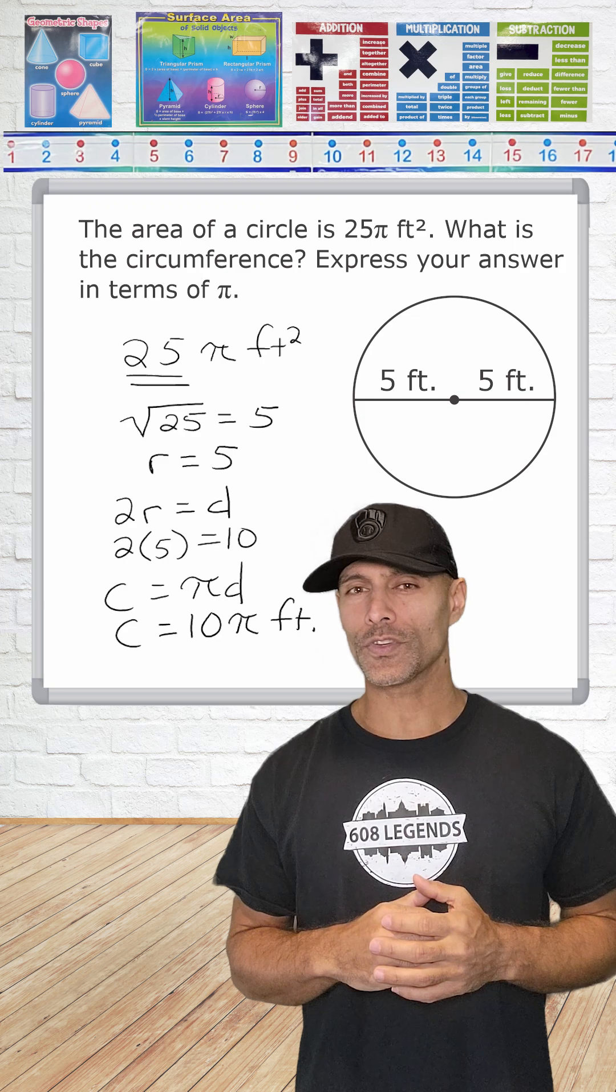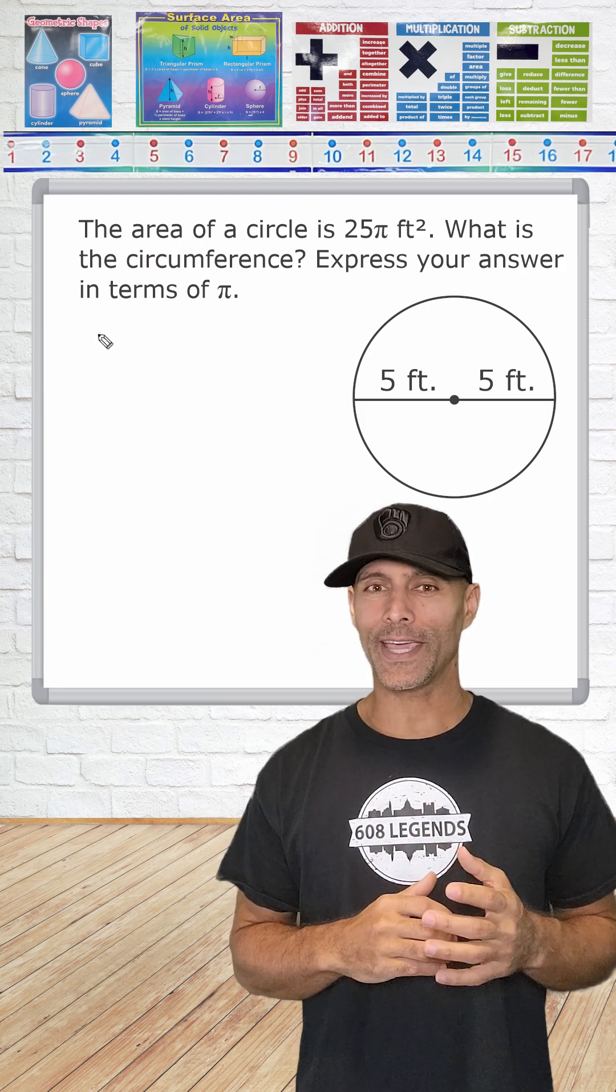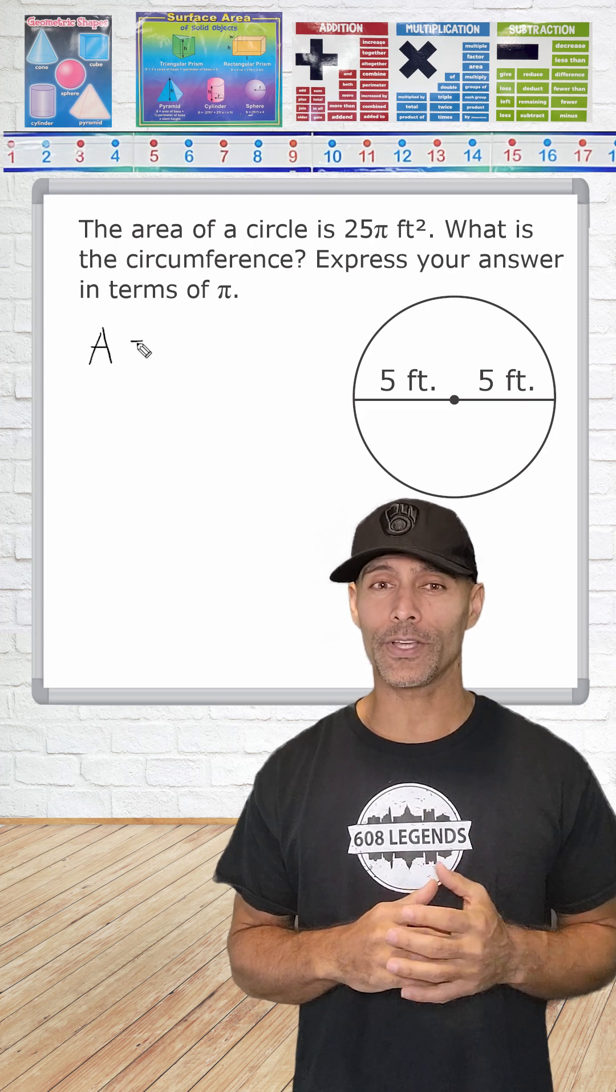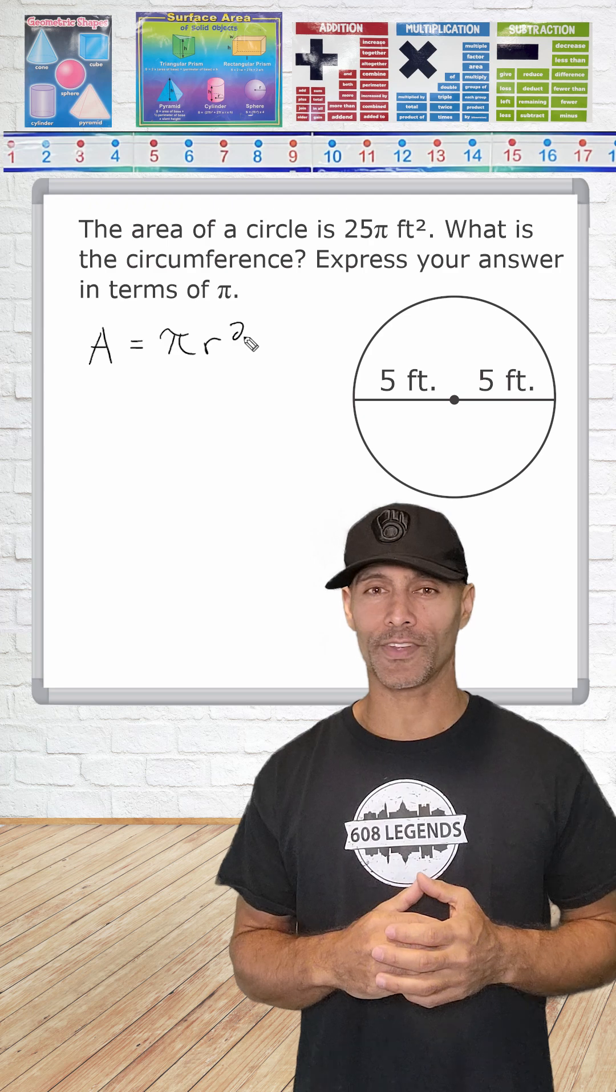All right, let's approach this problem more formally. So what we're going to do is start by expressing the equation for the area of a circle, which is area is equal to π times radius to the second power.